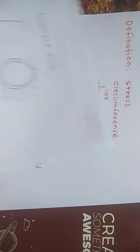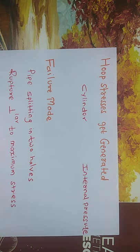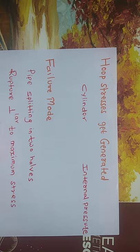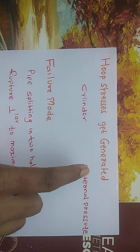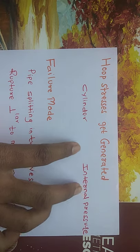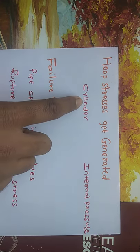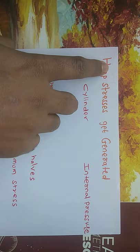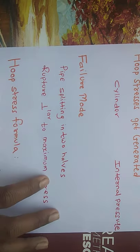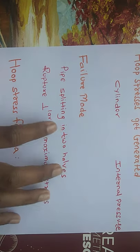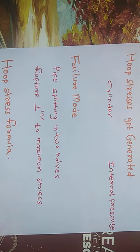Hoop stress gets generated whenever there is a cylinder or circular pipe and there is internal pressure. Take the example of a circular water tank with water inside — that water generates internal pressure on the walls of the cylinder, and because of that, hoop stress gets generated.